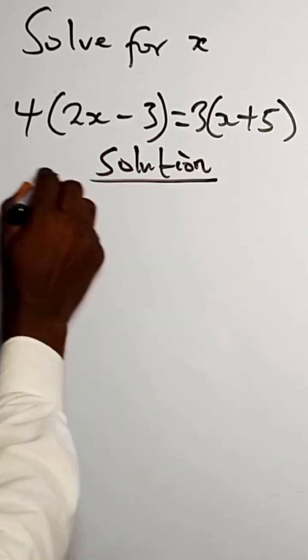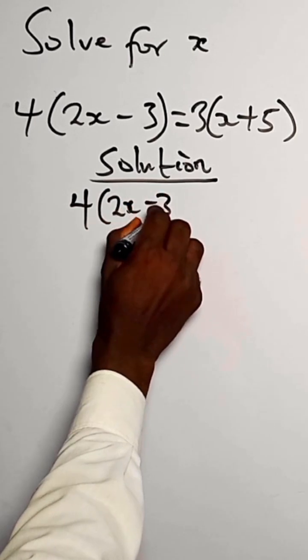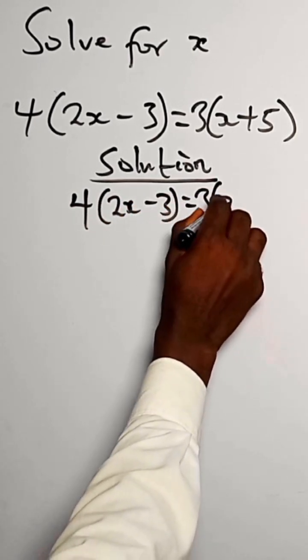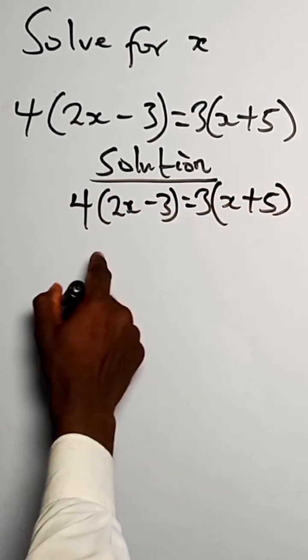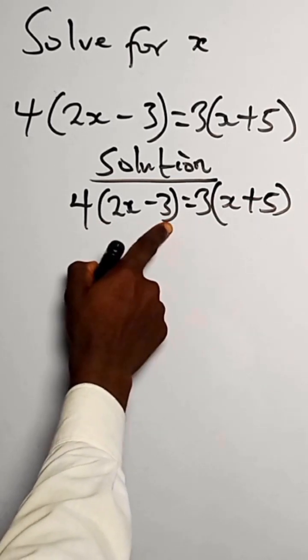Okay, so for 4 into 2x minus 3 equals 3 into x plus 5, what do we do? We distribute this with this.